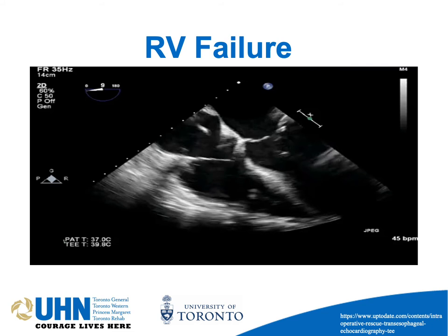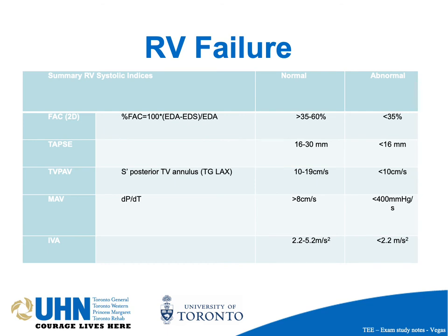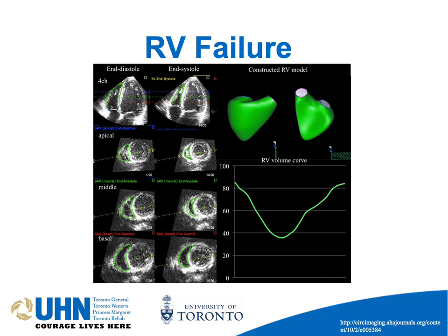For RV failure the RV is not contracting well. There are many ways to determine RV failure, but in rescue TEE use your eyes — do not do anything fancy. Is the RV working or not? More complex measures of RV failure include TAPSE: excursion of the tricuspid annulus less than 60mm is indicative of RV dysfunction. But the answer is always the eyeball test: is the LV or the heart working? Is there volume outside the heart? Is there appropriate volume inside the heart?